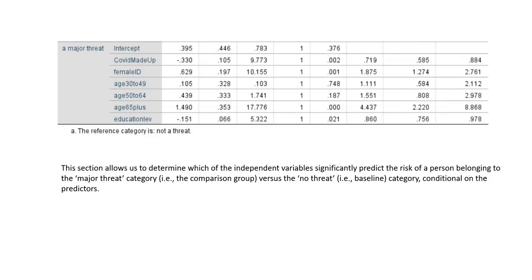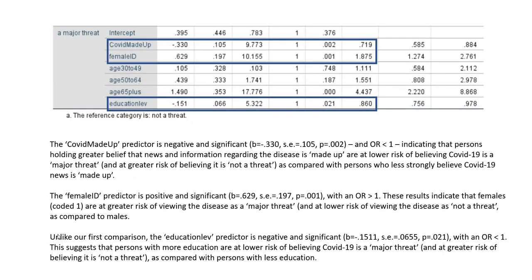The next section of the regression table determines which independent variables significantly predict the risk of a person belonging to the major threat category versus the no-threat category. Note that the term 'risk' here doesn't imply that one category is dangerous or bad; we can use terms like likelihood or probability instead. The COVID made up predictor is again negative and significant, indicating persons holding greater belief that COVID-19 news is made up are at lower risk of believing the disease is a major threat. The female ID predictor is positive and significant, indicating females are at greater risk of viewing the disease as a major threat compared to males.